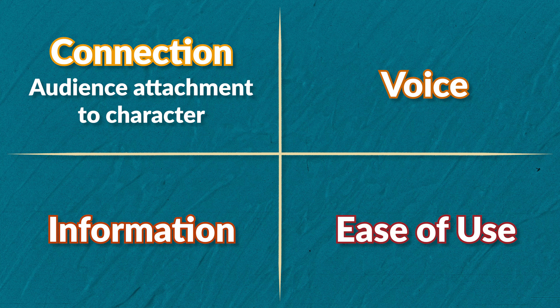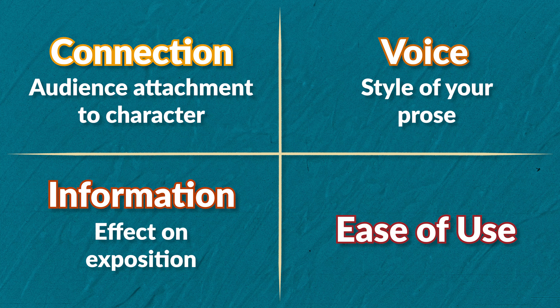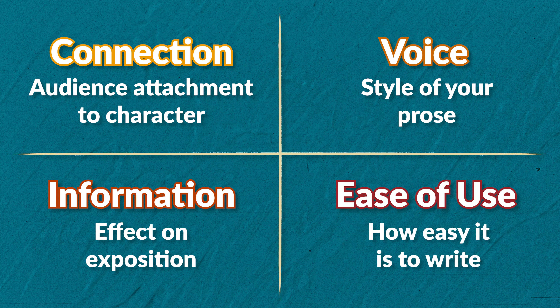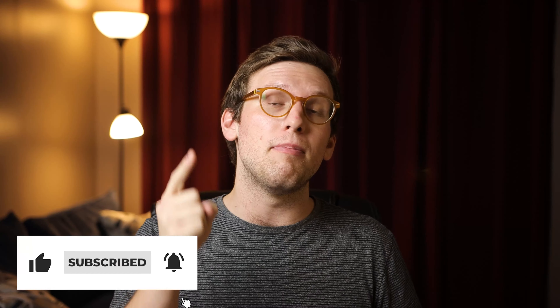Connection refers to how easy it is to get the audience attached to the perspective character. Voice is the style of your prose. Information is how the POV affects your exposition. And ease of use is how easy it is to write in that POV. This video is meant to be a baseline to help you choose a POV that's right for you and your story, but we're going to make videos over the next few months diving into each of them to explore their intricacies.